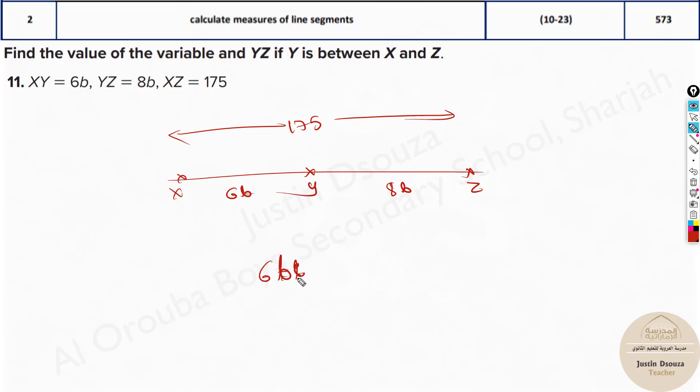What you need to do is the best way would be add 6b plus 8b equals 175. Now we can easily find the value of b. 6 plus 8 would be 14b equals 175. Now just divide 175 by 14 and then solve it.